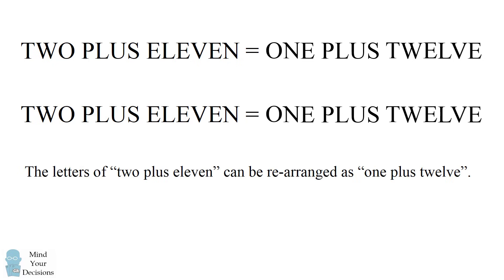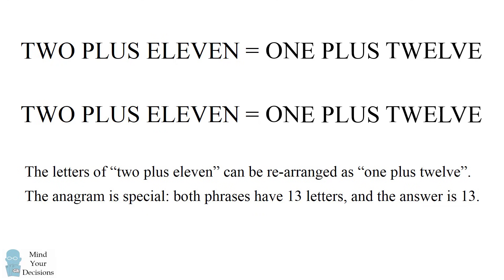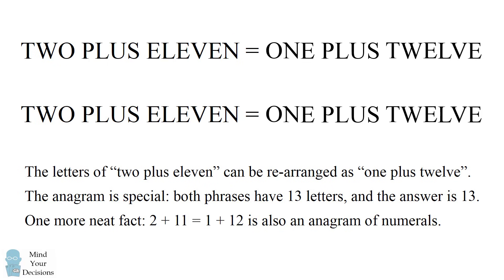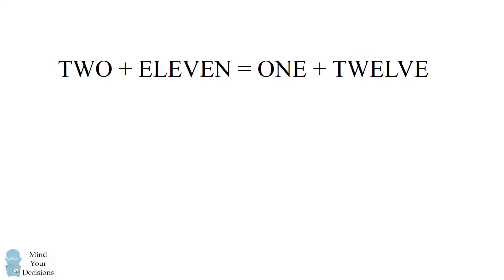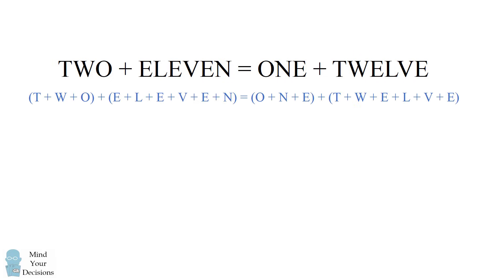What's further special about this is that the phrase 1 plus 12 and 2 plus 11 both have 13 letters and the answer to each phrase is 13. You could even have the anagram of the numerals 2 plus 11 and 1 plus 12 be an anagram of numerals. So now let's use this to solve the problem. We know that 2 plus 11 equals 1 plus 12 in terms of each of the letters in each of the words.